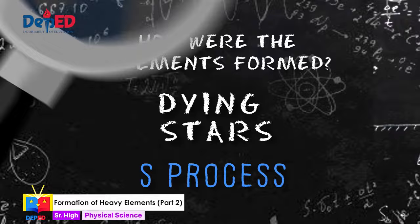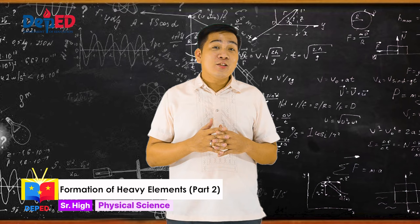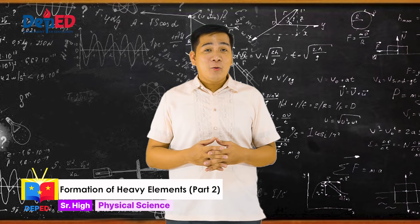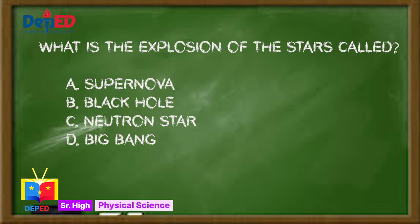Now it's time to check how much you understood from the episode. All you have to do is to choose the letter of the best answer. Let's start with an easy question. Question number one: What is the explosion of the stars called? A. Supernova, B. Black Hole, C. Neutron Star, or D. Big Bang. The correct answer is A. Supernova.